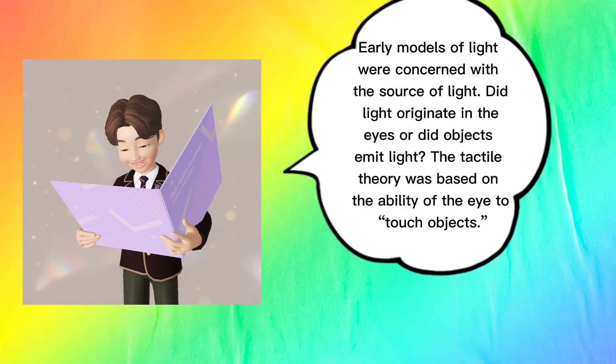Early models of light were concerned with the source of light. Did light originate in the eyes or did objects emit light? The tactile theory was based on the ability of the eye to touch objects.